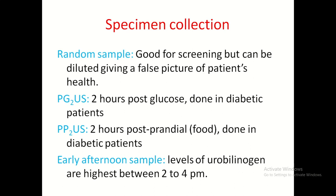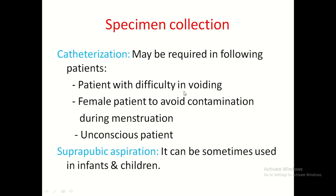Sometimes special collection methods are required, such as catheterization or suprapubic aspiration. Catheterization may be required in patients with difficulty holding urine, female patients to avoid contamination during menstruation, and unconscious patients. In suprapubic aspiration, a needle is inserted in the suprapubic portion into the bladder and urine is collected. This is an invasive procedure but is sometimes required in infants.